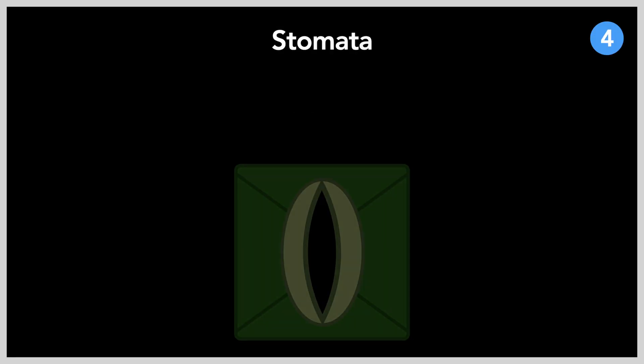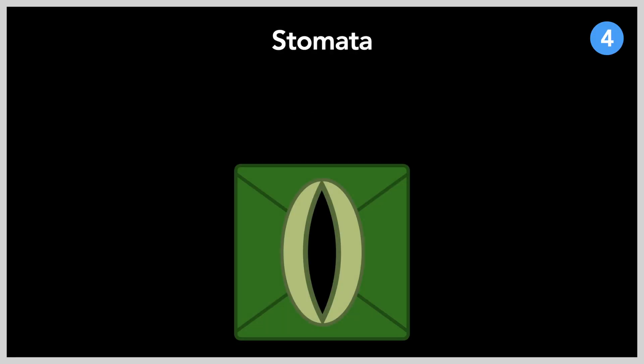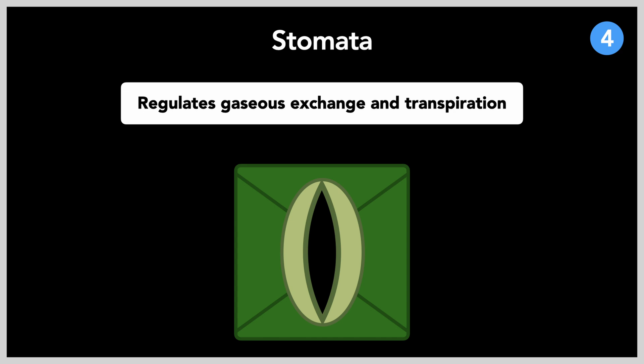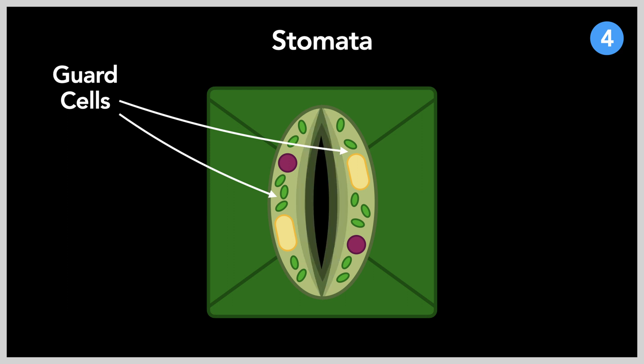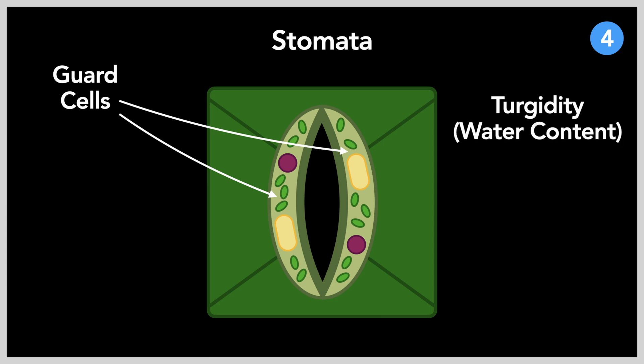The stomata regulates gaseous exchange in leaves, and on top of that, regulates water loss through transpiration as well. The so-called doors of the stomata are its guard cells. These cells can inflate and contract depending on its water content. The proper term for this is turgidity, the water content of the guard cell. When the guard cells are turgid, the stoma is wide open. When the cells are flaccid, an antonym of turgid, the stoma is closed.